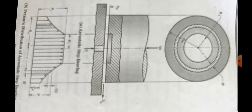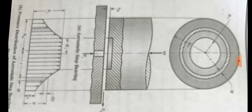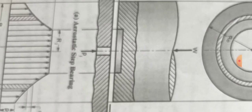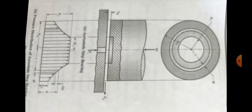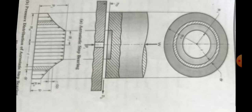In the aerostatic step bearing, W is the weight acting on the bearing, and h is the minimum film thickness. At the center, at radius ri, we have maximum pressure, which decreases toward the outer radius. So at the inner radius pressure is maximum, and at the outer radius pressure is minimum. Pi is the input pressure. The pressure distribution is shown below.